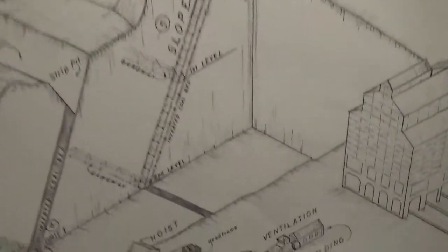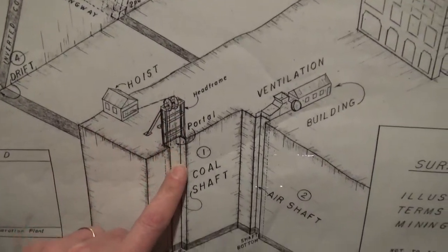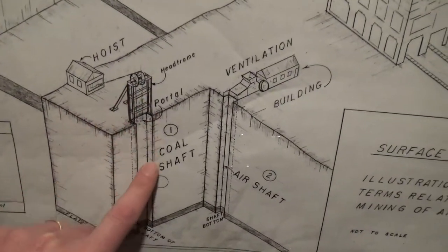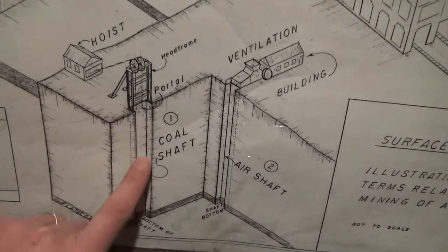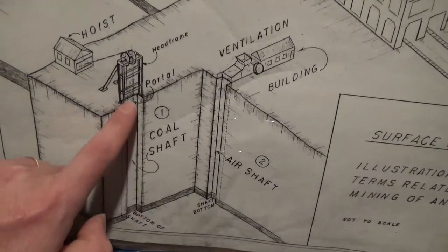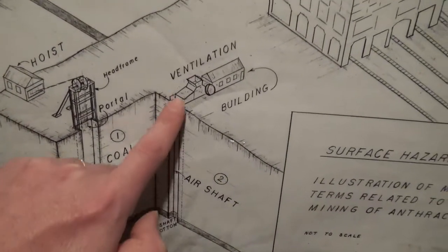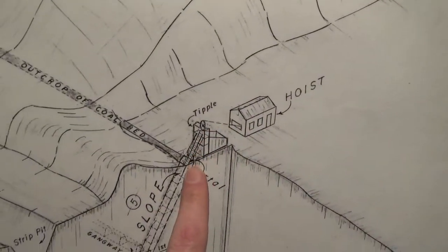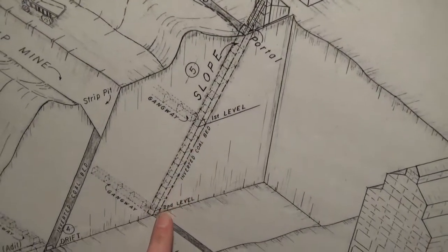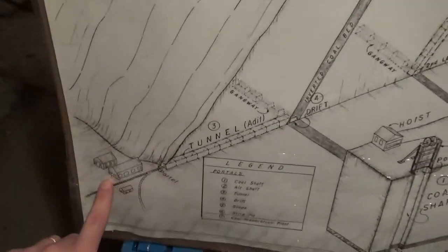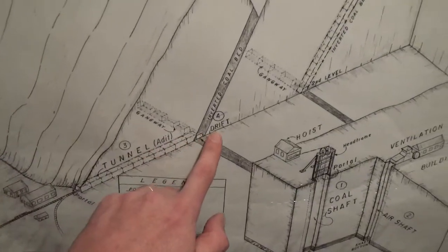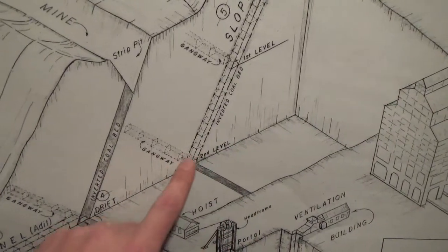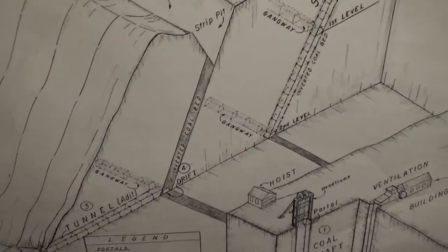So again, you have your vertical haulage shaft — to lower men, equipment, and back in the day animals, getting the mine out and the men in. Then you have your vertical air shaft. Then you have your slope. And then you have your tunnel, which just goes straight in. And a drift, which is basically just a tunnel with a slight 1% to 2% grade increase to drain water.